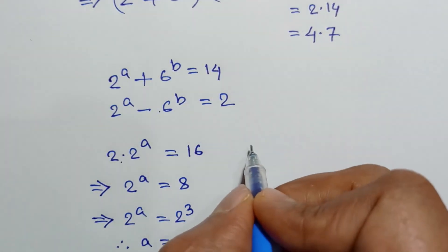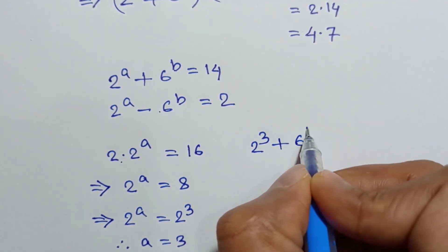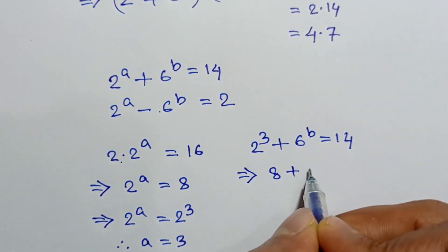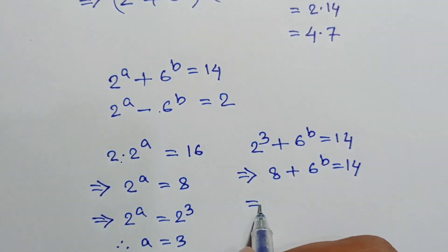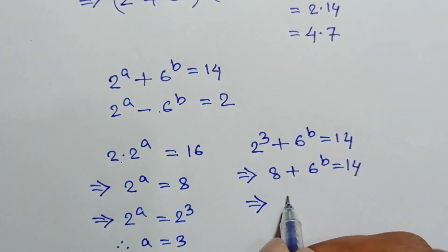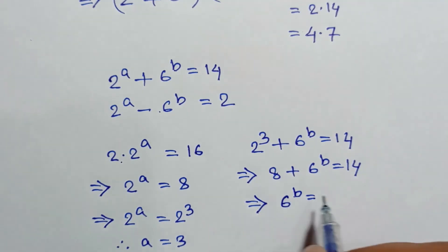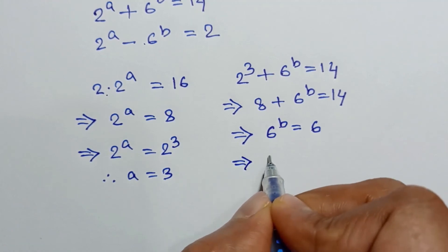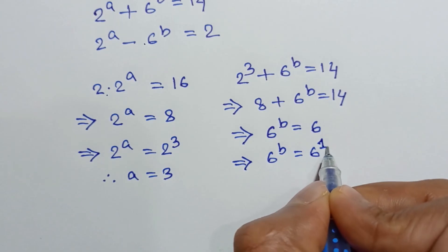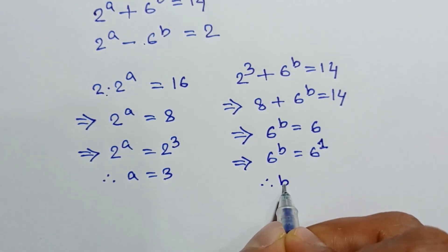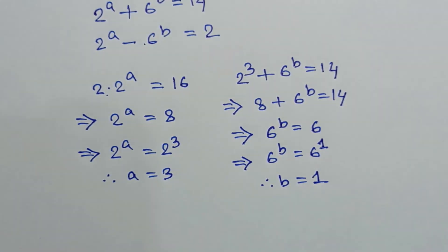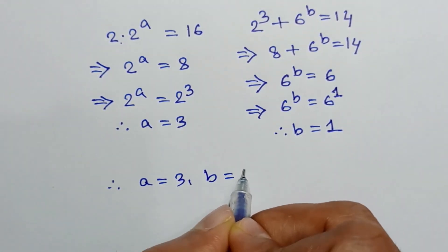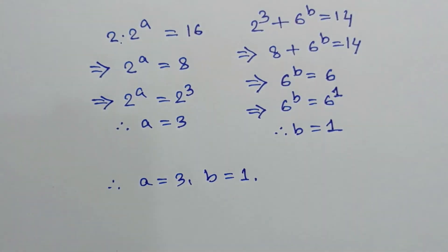Substituting a equals 3 into the first equation: 2^3 plus 6^b equals 14, so 8 plus 6^b equals 14. Taking 8 to the right side: 6^b equals 14 minus 8 equals 6, which means 6^b equals 6^1. Since the bases are the same, b equals 1. So the solution is a equals 3 and b equals 1, which is the only integer solution.